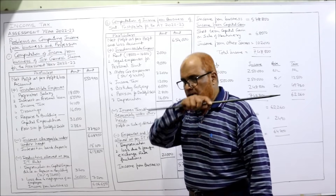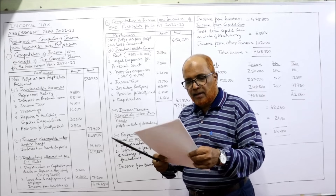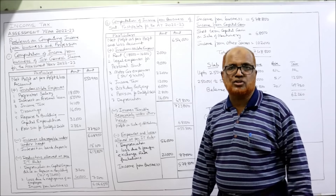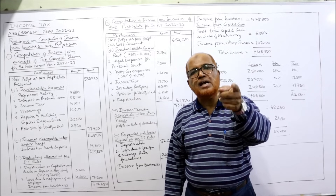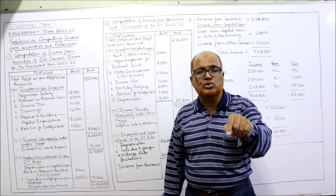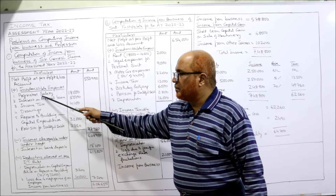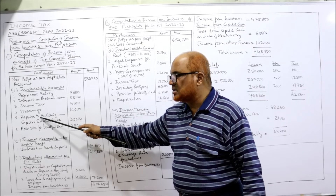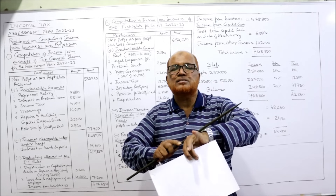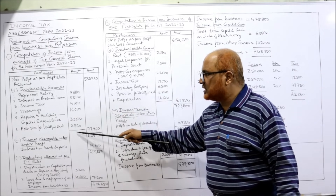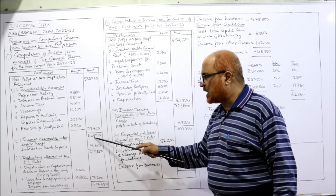Provision for doubtful debts — specifically stated in the Income Tax Act — is not allowed as deduction. Provision for warranties is allowed as deduction. Depreciation: since nothing is given in the adjustments regarding depreciation, we assume it is as per the IT Act rules — so it is allowed. The inadmissible expenses are: proprietor's salary, interest on personal loan, income tax, drawings, capital expenditure on repairs to building, and provision for doubtful debts — total 67,960. Adding to net profit: 5,50,990 + 67,960 = 6,28,950.